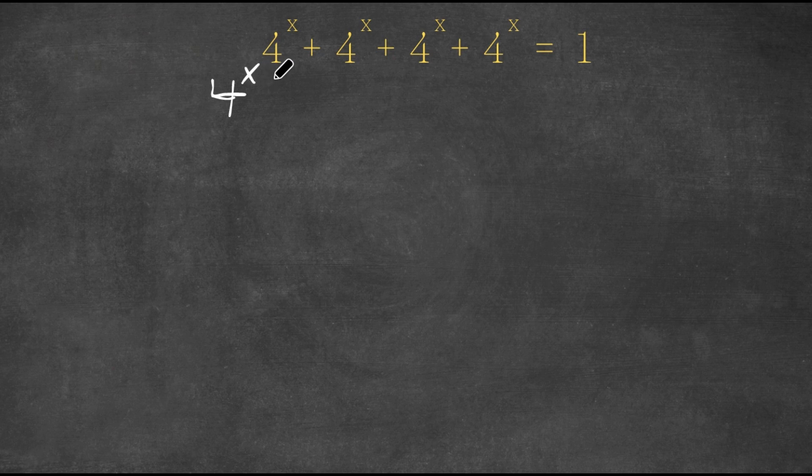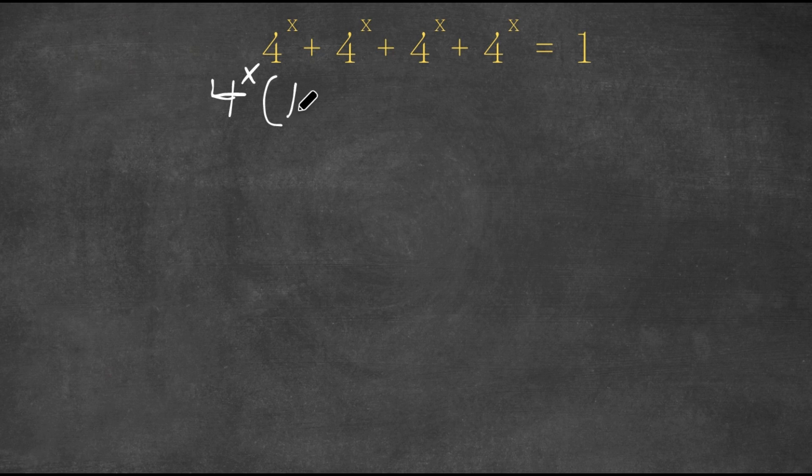Now I have 4^x times... 4^x divided by 4^x is 1 because anything divided by itself is 1. So I have 1 + 1 + 1 + 1, and this equals 1.